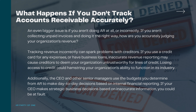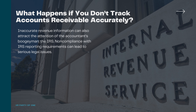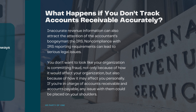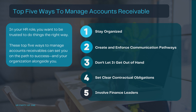Additionally, the CEO and other senior managers use the budgets you determine from AR to make day-to-day decisions based on internal financial reporting. If your CEO makes strategic business decisions based on inaccurate information, you could be at fault. Inaccurate revenue information can also attract the attention of the accountant's boogeyman — the IRS. Non-compliance with IRS reporting requirements can lead to serious legal issues. You don't want to look like your organization is committing fraud, not only because of how it would affect your organization, but also because of how it may affect you personally. If you're in charge of accounts receivable and accounts payable, any issue with them could be placed on your shoulders. In your HR role, you want to be trusted to do things the right way.